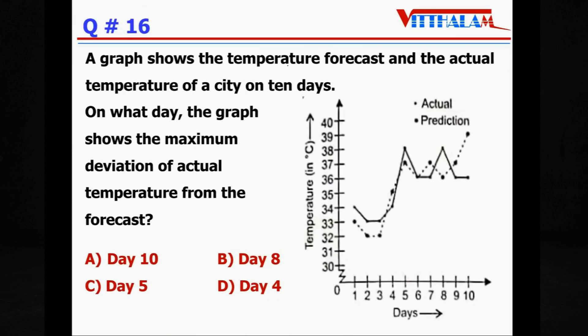A graph shows the temperature forecast and the actual temperature of a city for 10 days. On x-axis it is number of days and this is the temperature in degree Celsius. Actual is this line and prediction is a dotted one. Actual is full line. So question is, on what day the graph shows the maximum deviation of actual temperature from the forecast?